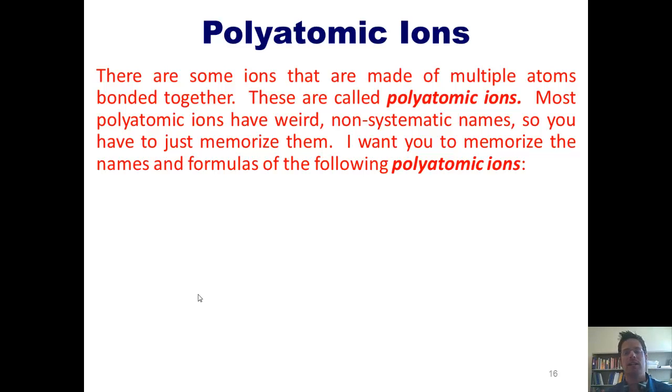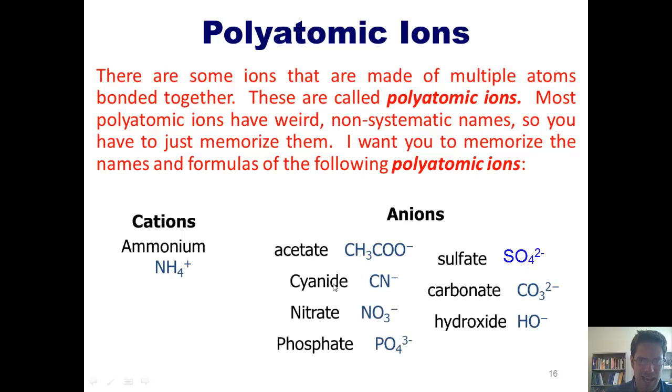As it turns out, there are some ions that are made up of multiple atoms bonded together. These are called polyatomic ions. Most polyatomic ions have weird and non-systematic names, so you just have to memorize them. I want you to memorize the names and formulas of the following polyatomic ions. There's this famous cation called ammonium, which has the formula NH4 and a charge of plus one, and there are these seven anions with the individual formulas and charges shown here.